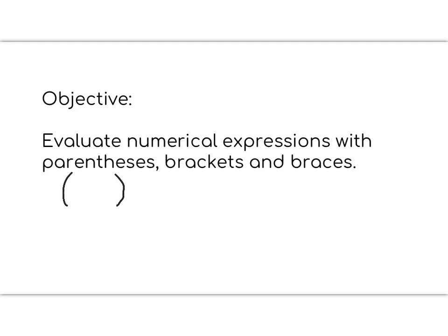We know that parentheses are round and they look like this. Brackets are square, and braces have a little dip in the middle. These are all different types of grouping symbols. Please pause to write the objective and the notes I drew in your notebook.